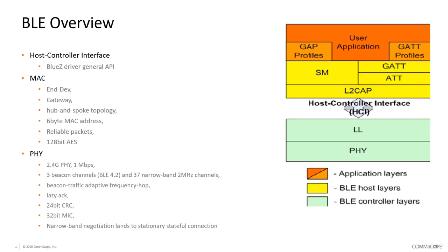The BLE band is split to provide 3 beacon channels, plus 37 narrow-band 2 MHz channels available for data. Beacon traffic uses adaptive frequency hopping as needed, lazy acknowledgement, a 24-bit CRC, 32-bit MIC, and narrow-band negotiation for data transfer.